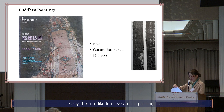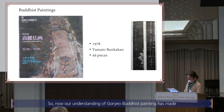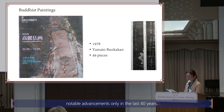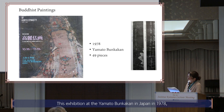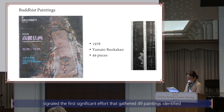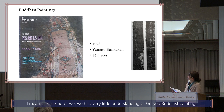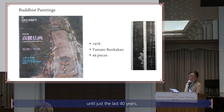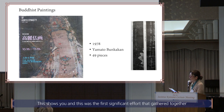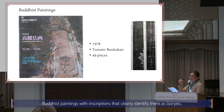I'd like to move on to painting. Our understanding of Koryo Buddhist painting has made notable advancements only in the last 40 years. The exhibition at the Yamato Bunkakan in Japan in 1978 signaled the first significant effort, gathering 49 paintings identified as Koryo Buddhist paintings — the first effort that gathered together Buddhist paintings with inscriptions clearly identifying them as Koryo.